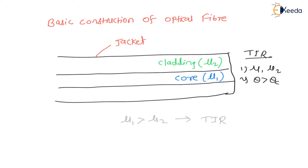Now we will see how light travels through the core and how total internal reflection takes place. Light is made incident at the starting surface of the core such that, after refraction, the light hits the wall of the core at an angle greater than its critical angle. After this, the whole of the light gets reflected in the same medium, and then again there will be continuous zigzag motion, with total internal reflection taking place every time.